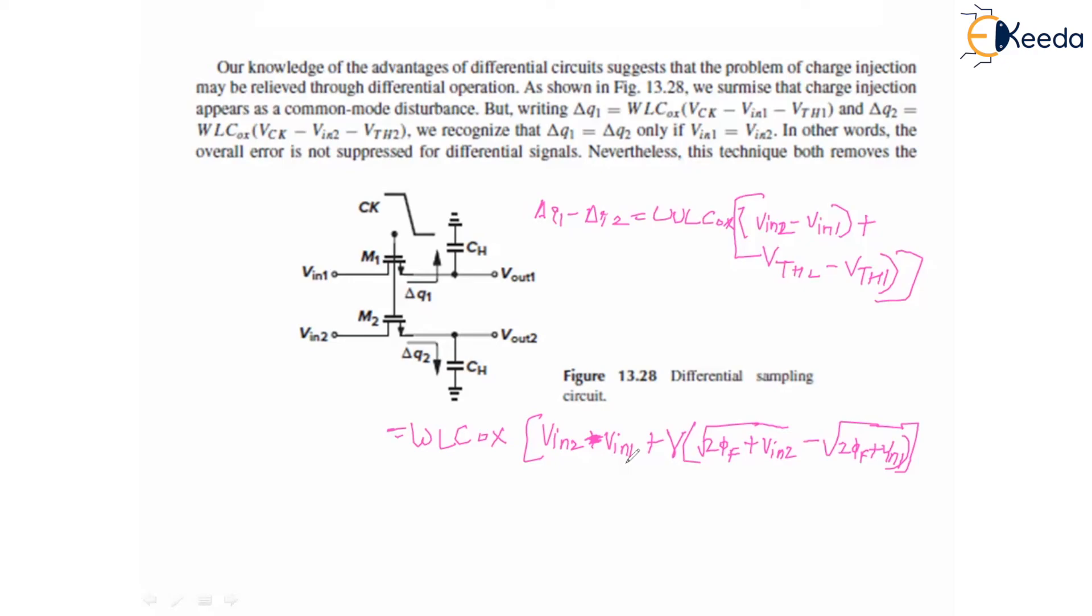The three techniques: in the first we have used the dummy switch to cancel, and in the second technique we have used complementary switches to reduce charge injection, and in the third technique we have seen the differential signal, the differential sampling circuit to reduce charge injection. This technique lowers the constant offset as well as the nonlinear component. In the next lecture we will start with unity gain sampler or buffer. Thank you.